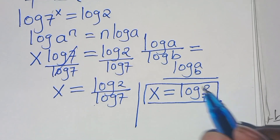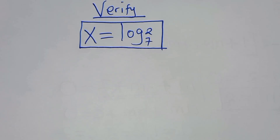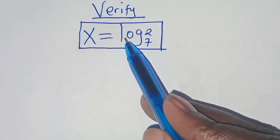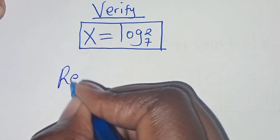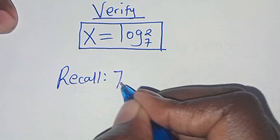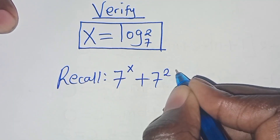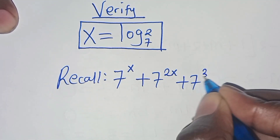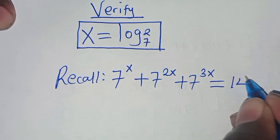The next step is to verify that this value of x satisfies the equation. Let's verify that x equals log base 7 of 2 satisfies 7 to the power x plus 7 to the power 2x plus 7 to the power 3x equals 14.